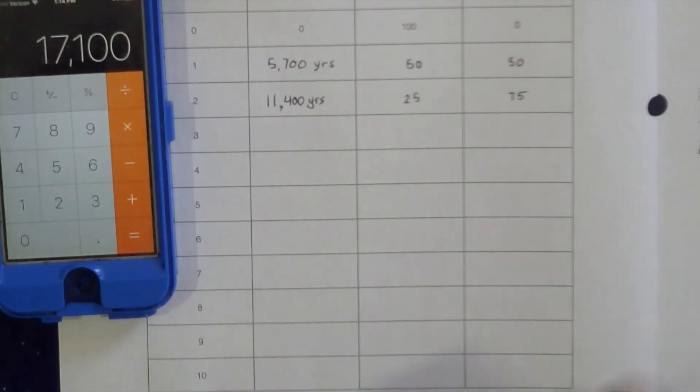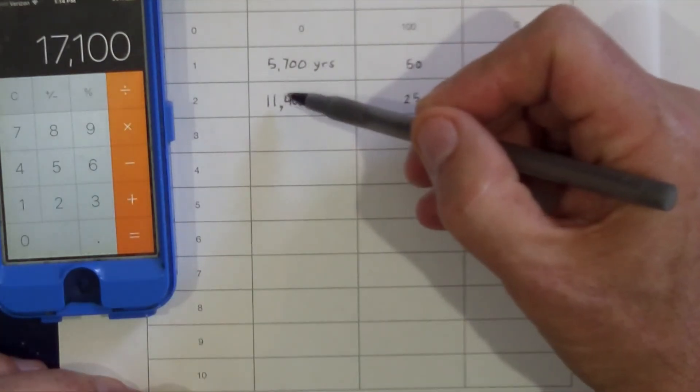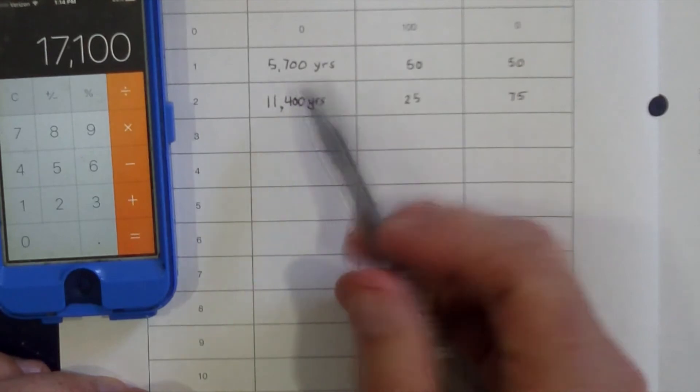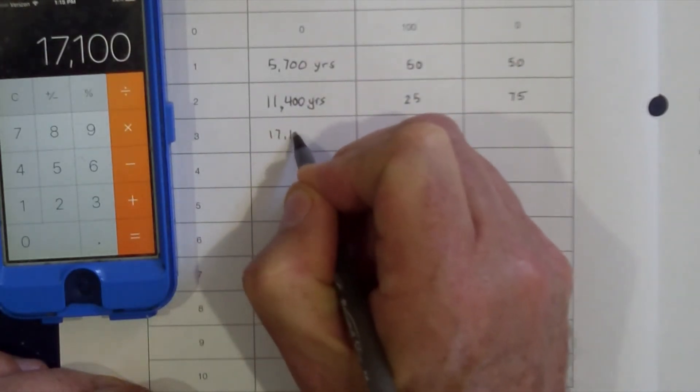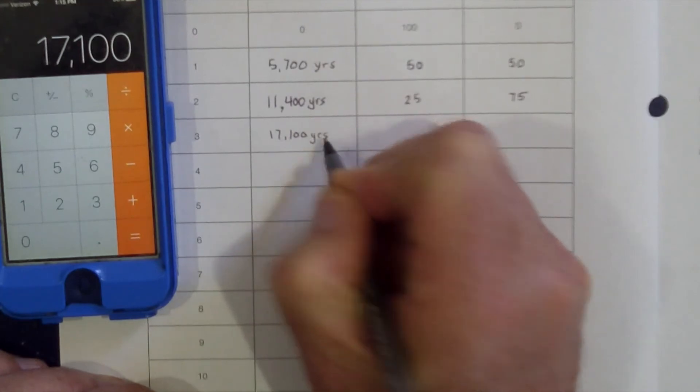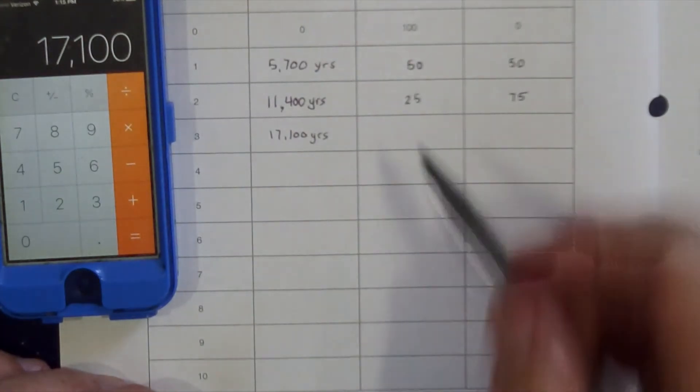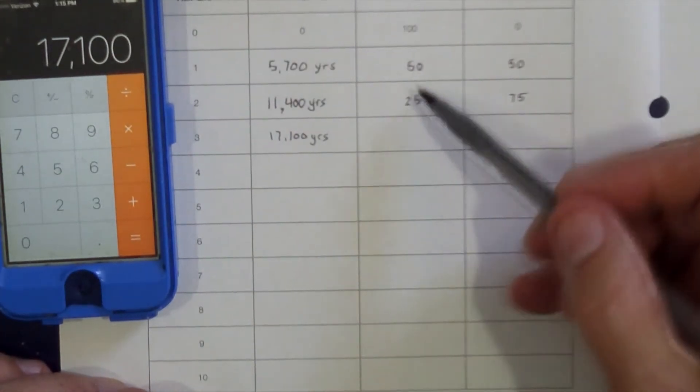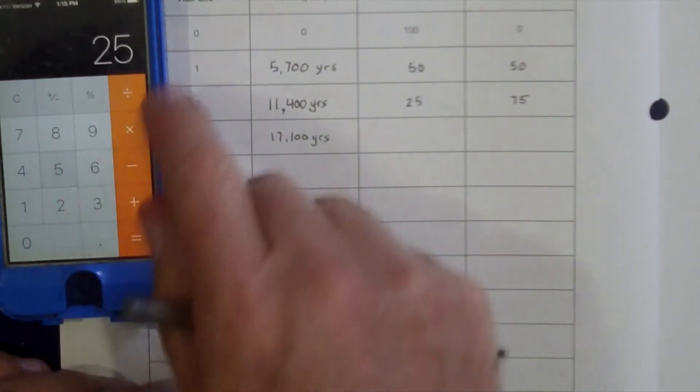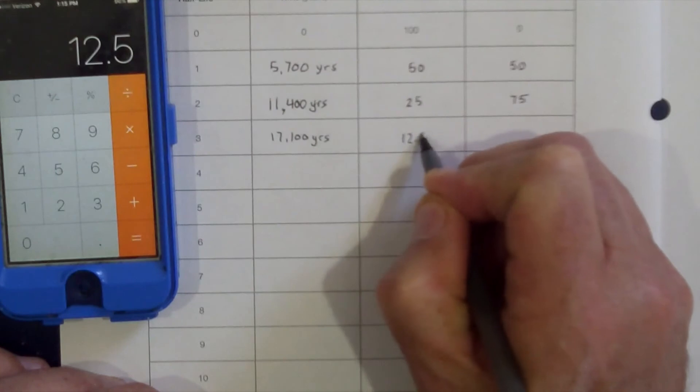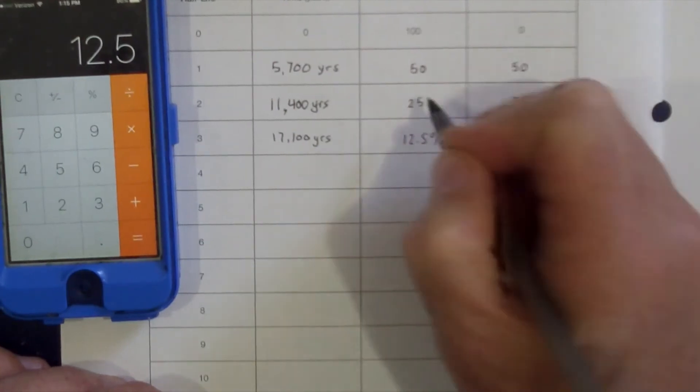We now add another 5,700 onto 11,400. We're now up to 17,100 years. After 17,100 years, the 25% Carbon-14 left over from the original amount is now half of that, down to 12.5% Carbon-14.